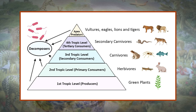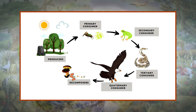Heterotrophs may be further grouped into primary consumers, secondary consumers, tertiary consumers, and so on. The primary consumers are comprised of plant-eating organisms called herbivores. The secondary consumers feed on the primary consumers, and the tertiary consumers feed on the secondary consumers. The final group, called reducers, feed on dead organic matter and include detritivores and decomposers.